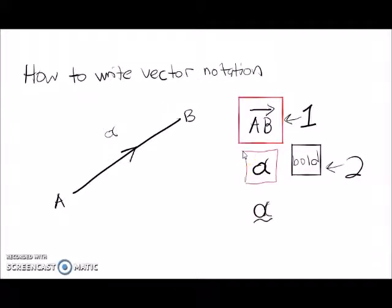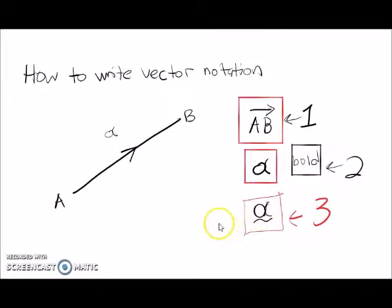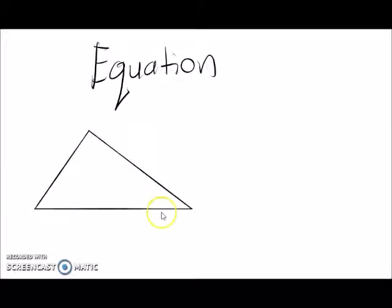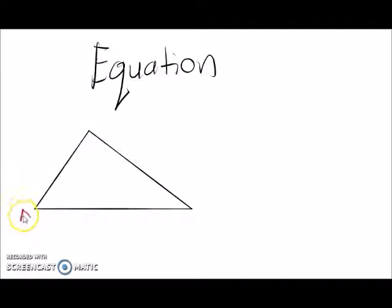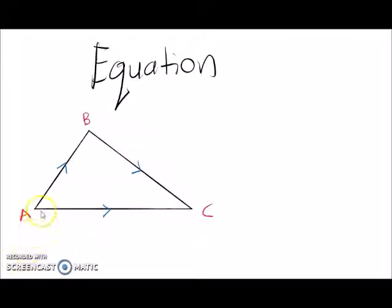These are the three types that represent a vector — one, two, and three. Now we are going to look at a triangle. The most important part in vector is how we make the equation of the vector. We represent the triangle vertices as A, B, and C and put arrows showing direction.